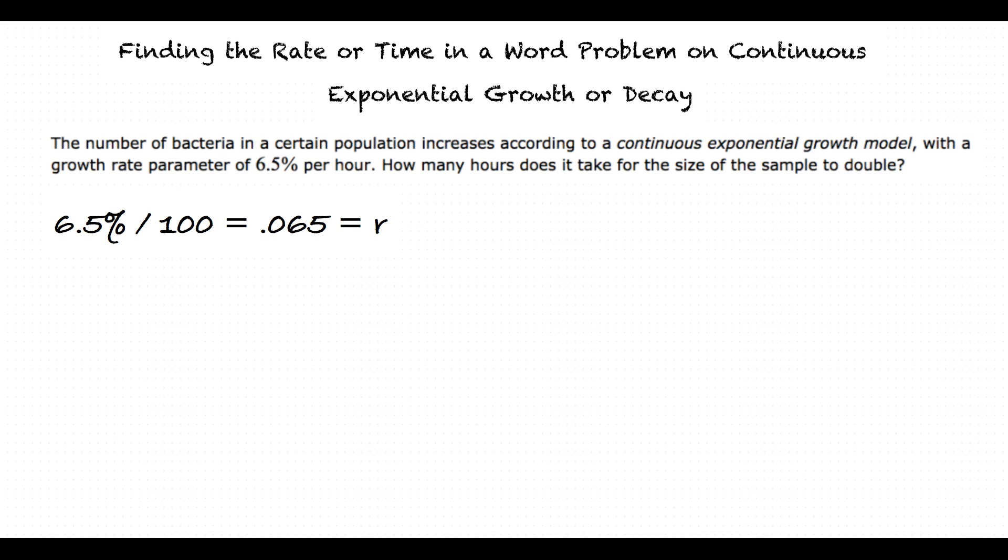According to the formula, don't we also need A and P in order to solve for t? Good question. In this problem, however, we want the time when the sample has doubled, thus when the original amount P becomes twice its original amount, 2P. Substituting these values into our equation reads: 2P equals P times e raised to the .065t.